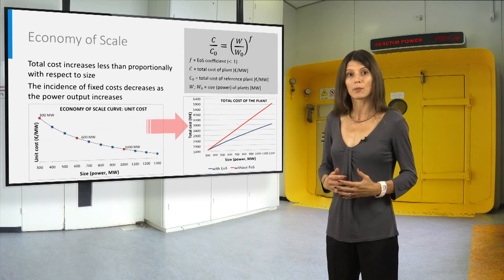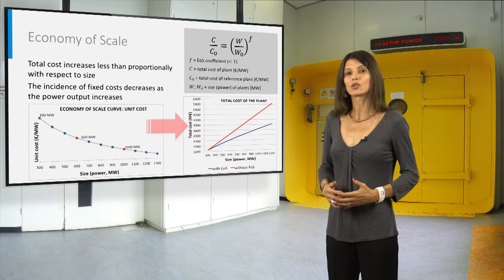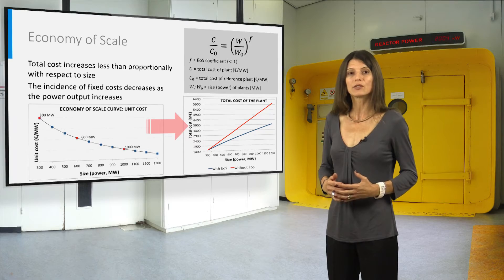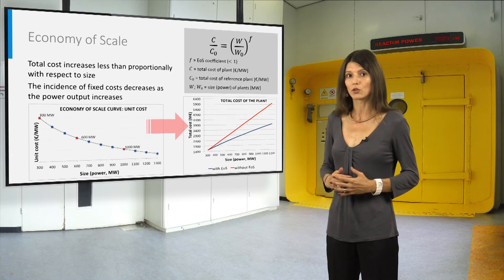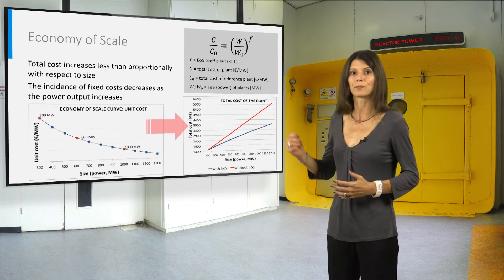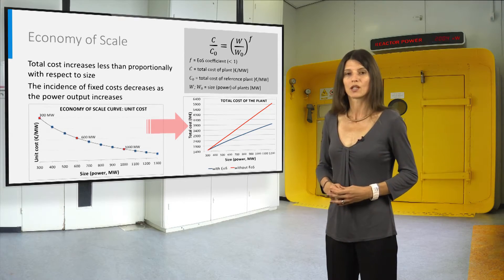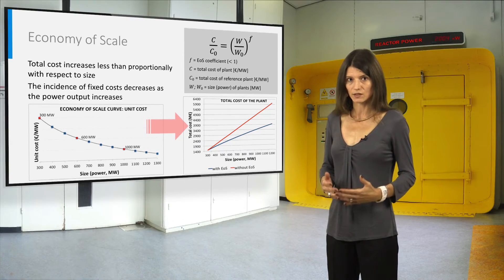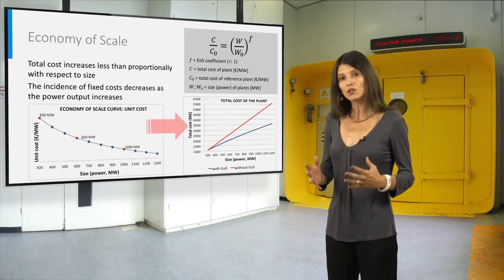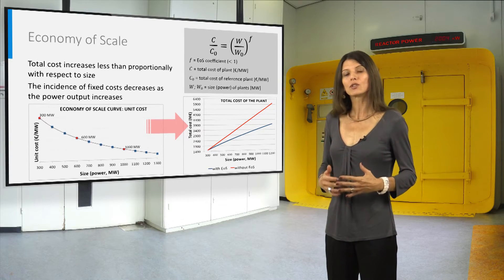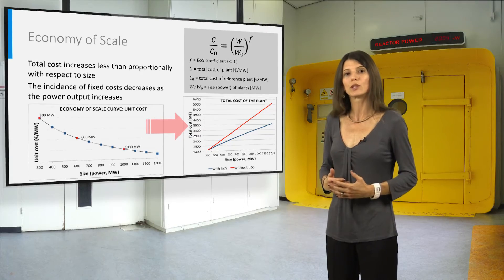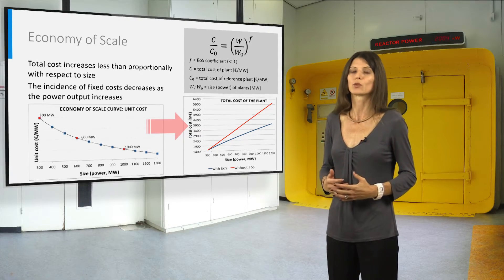The economy of scale applies to capital costs of all industries and even to single pieces of equipment, with different specific coefficient F in the formula. The principle is as follows: if the plant size increases in terms of output, total cost increases less than proportionally with respect to the plant output. Therefore, unit construction cost is expected to be lower for a large plant compared to a smaller one, instead of being constant.